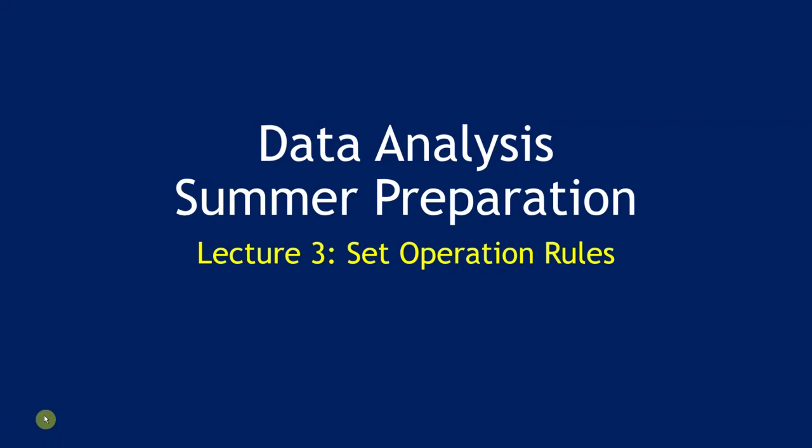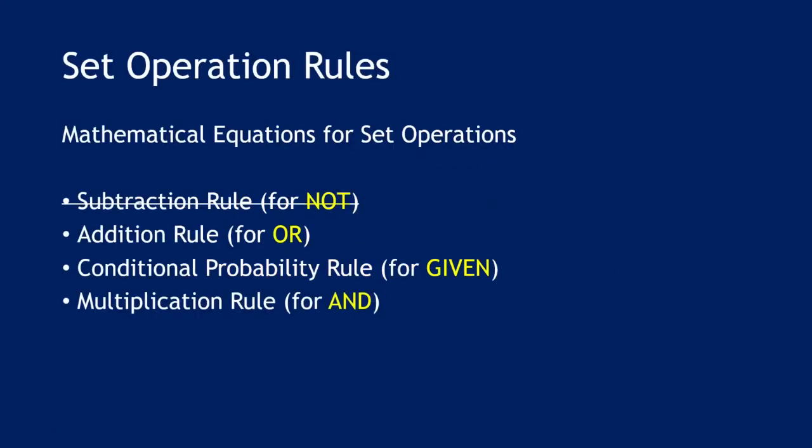Hi everyone, this is the third lecture in the summer preparation series on probability. Today we will talk about set operation rules. These are simple mathematical equations for calculating set operations efficiently and quickly. There are technically four rules, but the first one — the subtraction rule — is so obvious we're going to skip it, as it's basically the definition of the not operation.